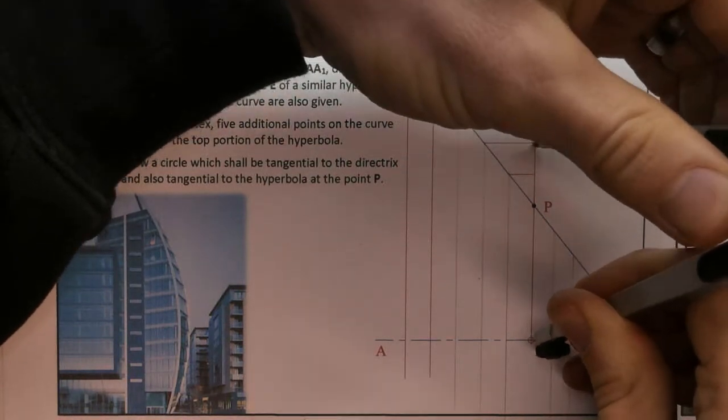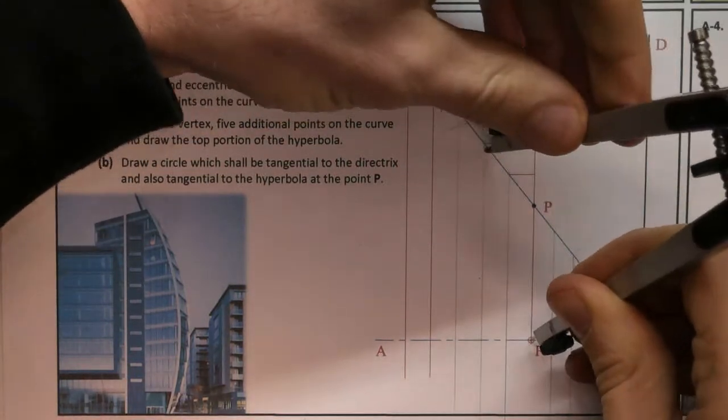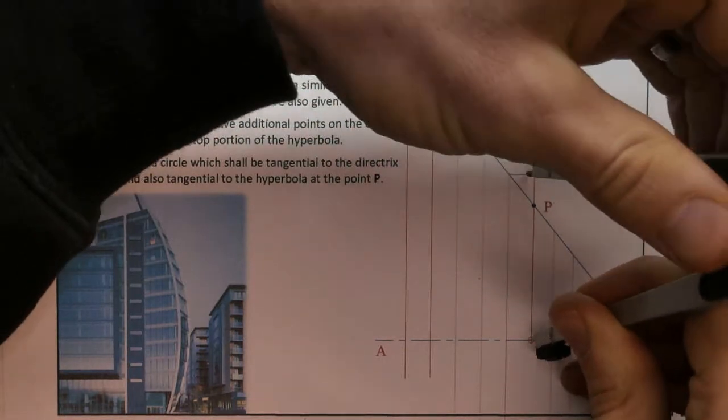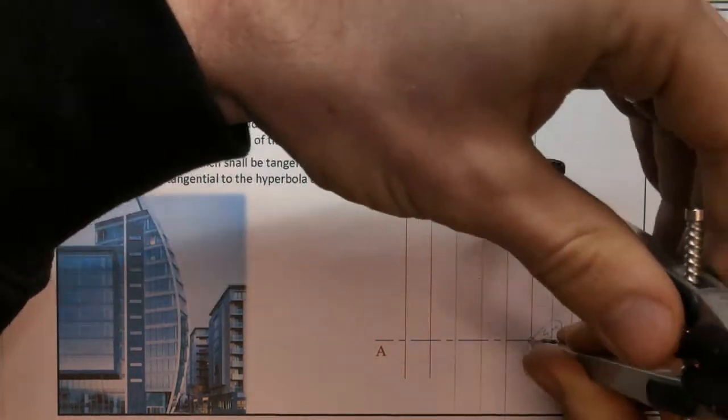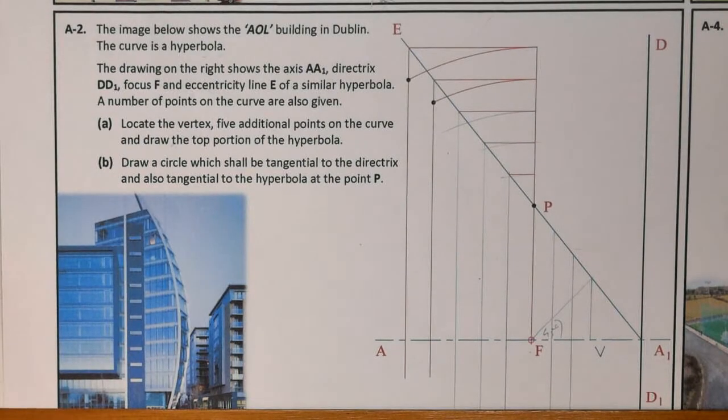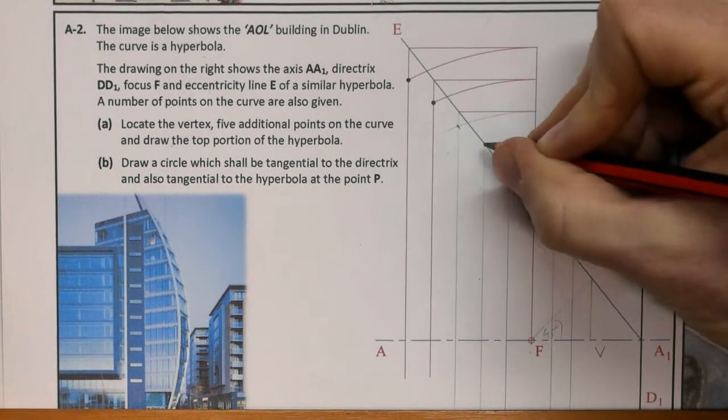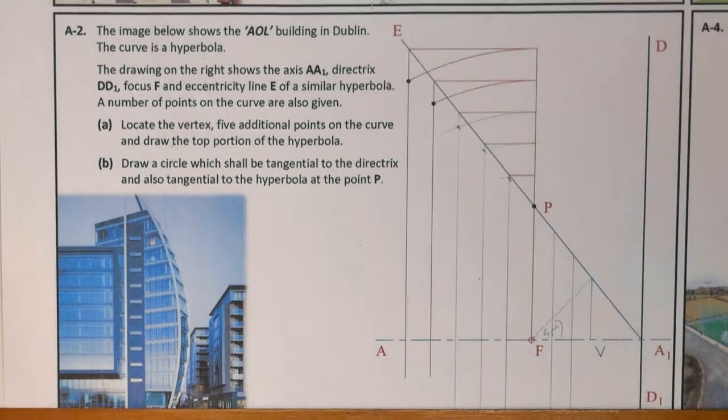We don't need to do the top half of this hyperbola, so we don't need to transfer it down to the bottom half. We've got one, two, three points there.